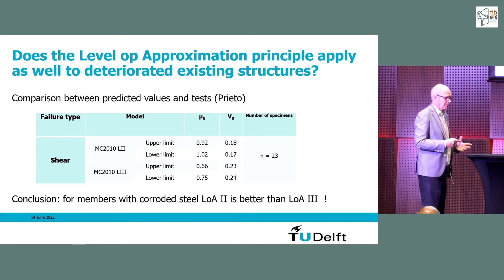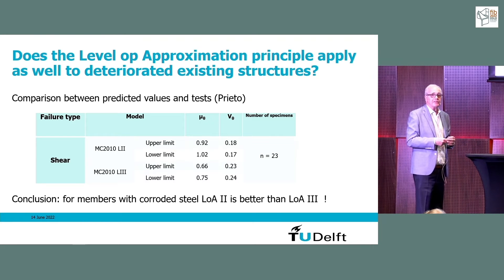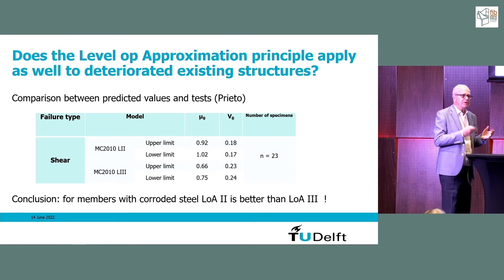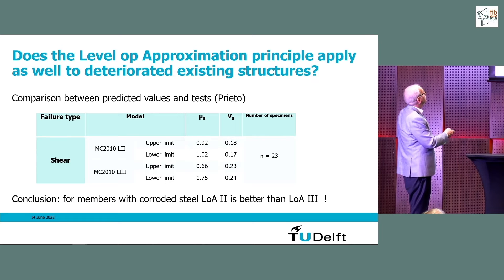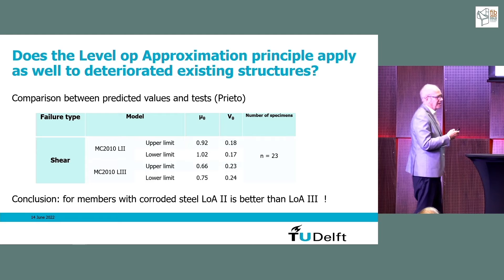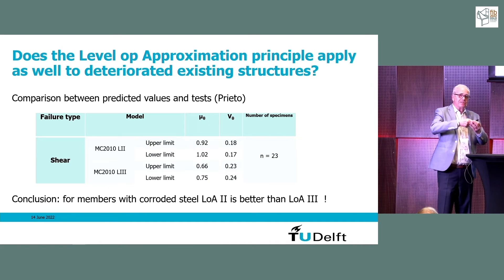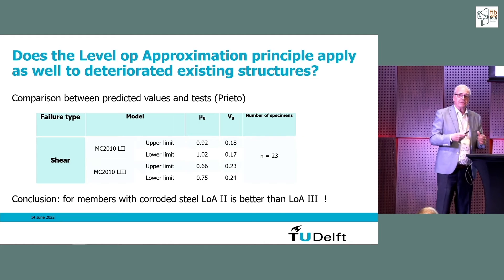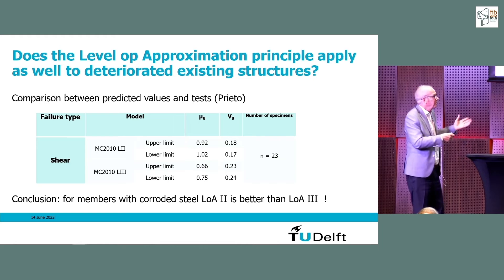Regarding the level of approximation: going to higher levels seems more accurate, but there is a warning for deteriorated structures with corroded reinforcement. An evaluation by Michael Prieto showed that Level 2 gave better agreement than Level 3, the more advanced approach. The reason is that for deteriorated structures you cannot reliably estimate input properties — micro-cracking around a corroding bar may not be visible externally, yet bond is reduced internally. When you don't know, you need a larger margin of safety, and the simpler model may be more reliable.